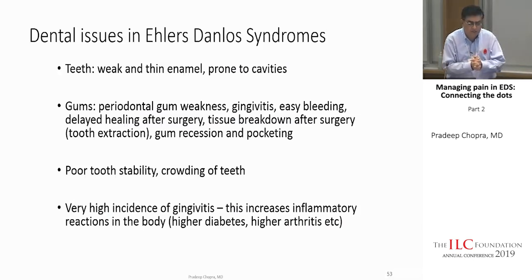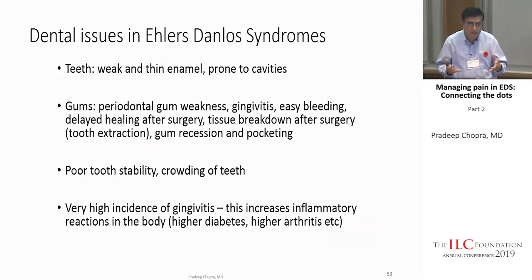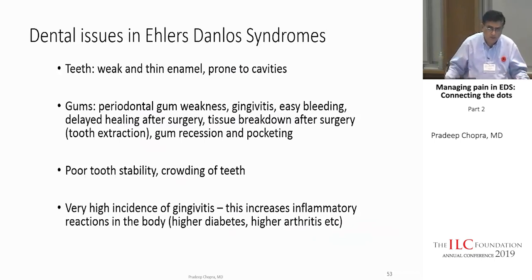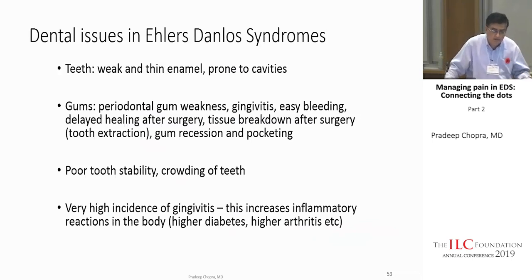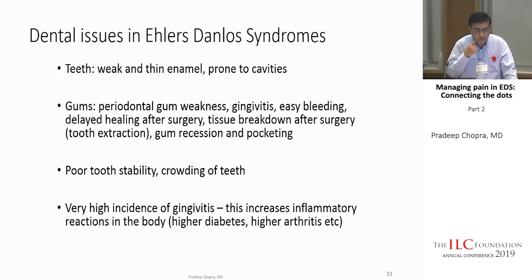On dental issues in EDS: teeth and gums are connective tissue, and there's constant wear and tear. Enamel is thin in EDS patients — sometimes dentists call it 'soft teeth.' They're prone to cavities, gum recession, pocketing, and unstable teeth. There's a high incidence of gingivitis because of the pocketing, which increases inflammatory reactions in the body and raises the risk of diabetes and arthritis.